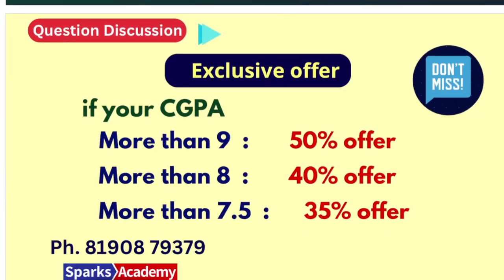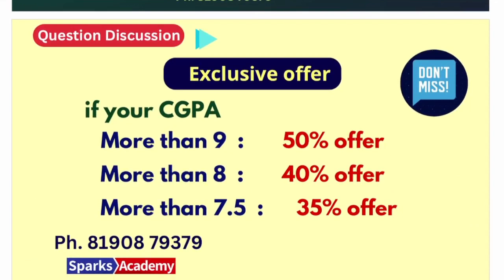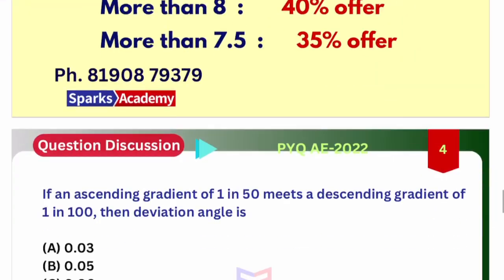Before the next question, here is an offer: if you have a good CGPA in your academics, you can apply for a discount on our courses. For CGPA above 9, you get a 50% offer; for 8, a 40% offer; for 7.5, a 35% offer. Make use of this exclusive offer by calling: 81908-79379.